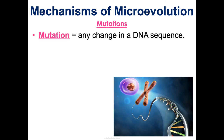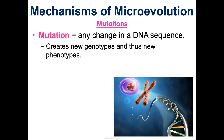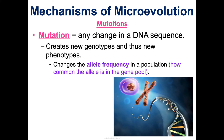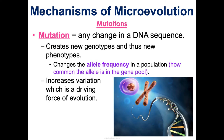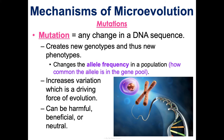Mutations cause micro-evolution. A mutation is any change in a DNA sequence, and it introduces a new genotype to the population and thus a new phenotype — if your genes are different, that physical trait is likely different as well. This changes the allele frequency in the population. Increases in variation are a driving force of evolution, and remember a mutation can be harmful, beneficial, or neutral — it can have no effect. Every population inherently has some sort of mutation and thus some sort of variation.